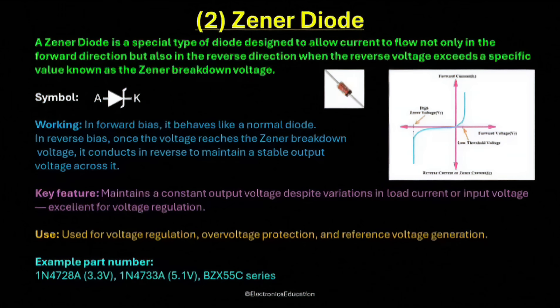To summarize, a Zener diode conducts in both directions, but it is the reverse conduction that makes it unique. When the reverse voltage reaches the Zener breakdown voltage, it allows current to flow in reverse and keeps the voltage stable. This simple yet powerful characteristic is the reason why Zener diodes are found in almost every regulated power supply and voltage protection circuit. The Zener diode is reliable, inexpensive, and essential for maintaining constant voltage levels.